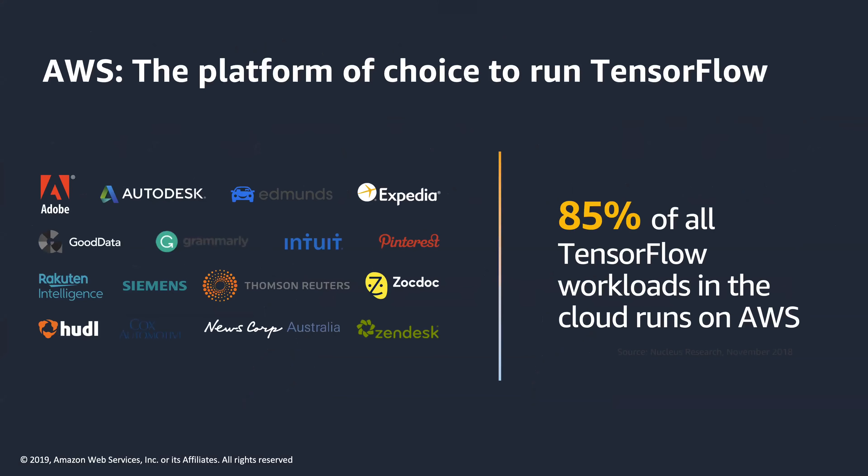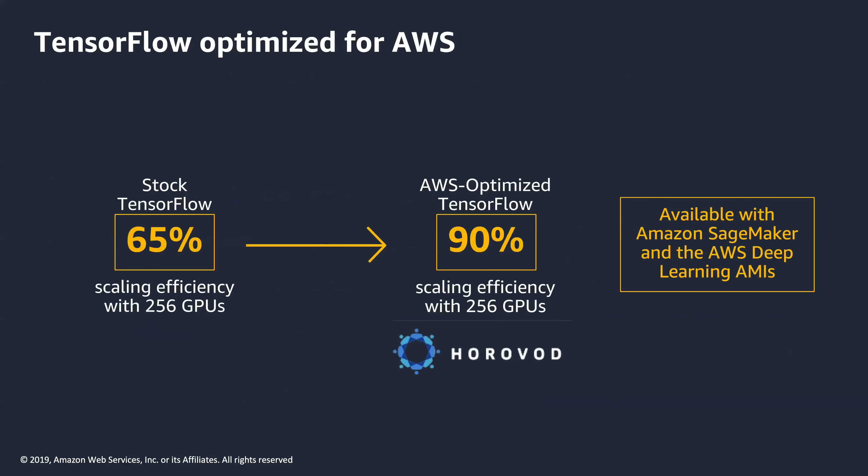TensorFlow is important and big at AWS — 85% of all TensorFlow workloads run in the AWS cloud. We want to make sure TensorFlow, like any other framework, is optimized for AWS. Stock TensorFlow runs at 65% scaling efficiency with 256 GPUs, but AWS-optimized TensorFlow — a version compiled and fine-tuned for the AWS cloud — runs at 90% scaling efficiency. That means you can actually train a ResNet-50 architecture on ImageNet in under 15 minutes, which is quite fast.